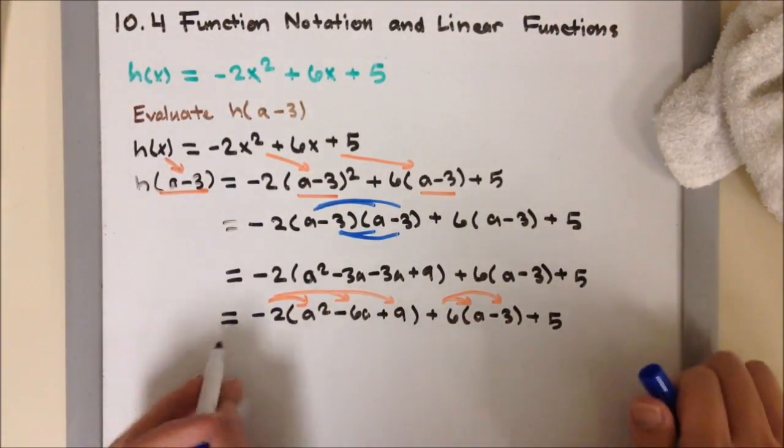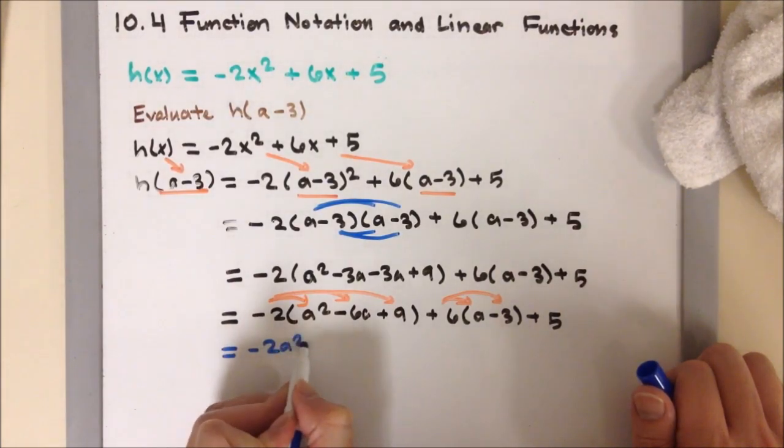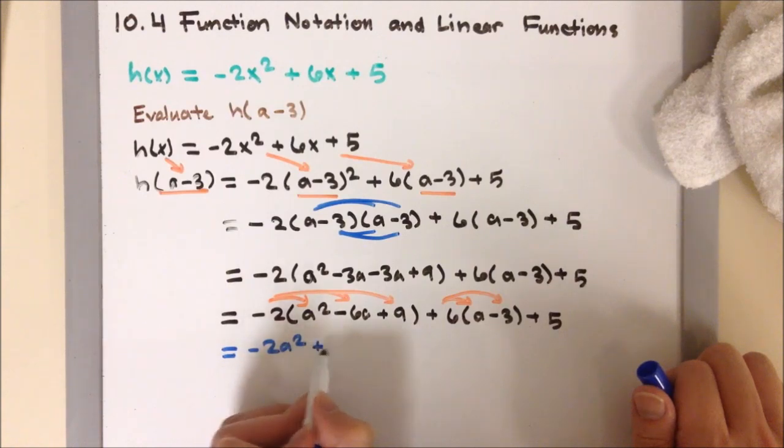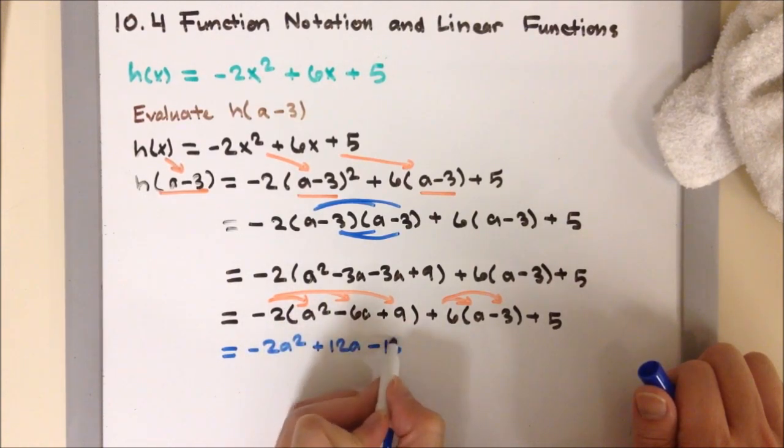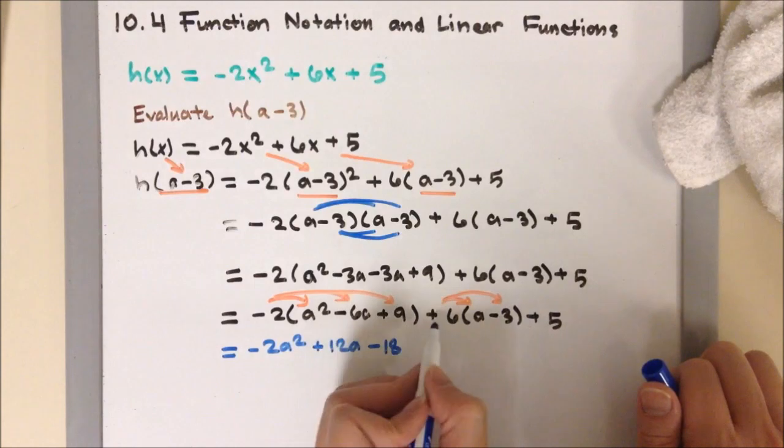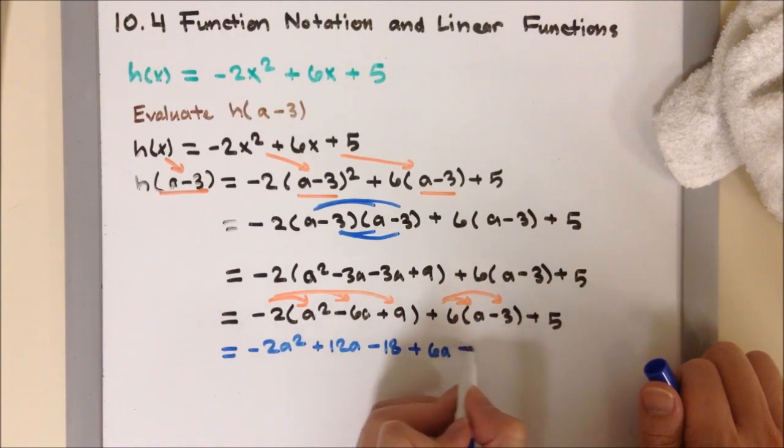So from there, I'm going to write it in blue. So I'm going to have negative 2A square. So negative 2 times negative 6A will be plus 12A. Next, I'm going to get minus 18. I'm going to distribute negative 2 with the positive 9. Alright, over here, positive 6 times A plus 6A. Positive 6 times negative 3 minus 18. And then bring down the plus 5.